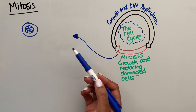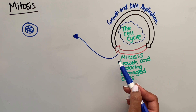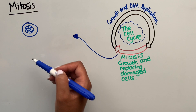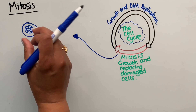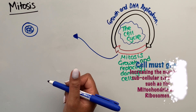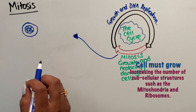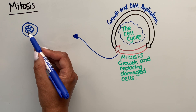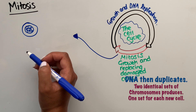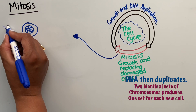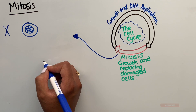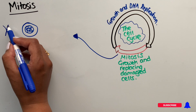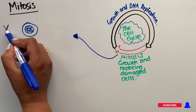Let us consider the stages of cell division before we get to mitosis. In the part of the cell that is not dividing, the DNA is spread out in long strings in the nucleus. Before it divides, the cell has to grow and increase the number of subcellular structures such as the mitochondria and the ribosomes. It will then duplicate the DNA so there is one copy for each new cell. The DNA is copied and forms X-shaped chromosomes, with each arm having exactly the same genetic information as the other arm.